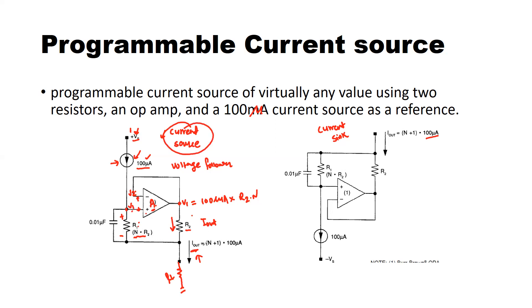The value of that output current is the voltage drop across the R2 which is V1 divided by the value of the resistor R2 itself. So I out will be V1 divided by R2.